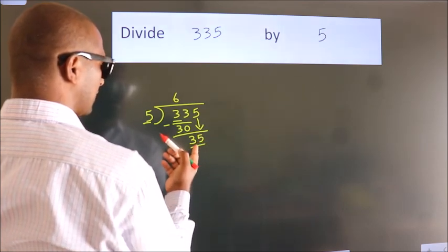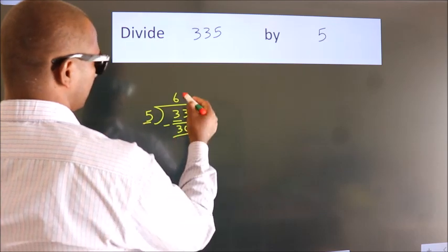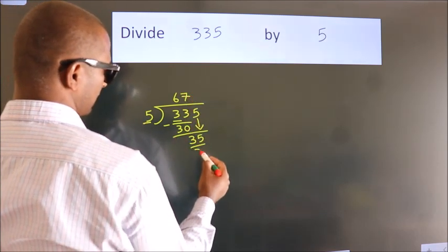When do we get 35? In the 5 table: 5 times 7 is 35.